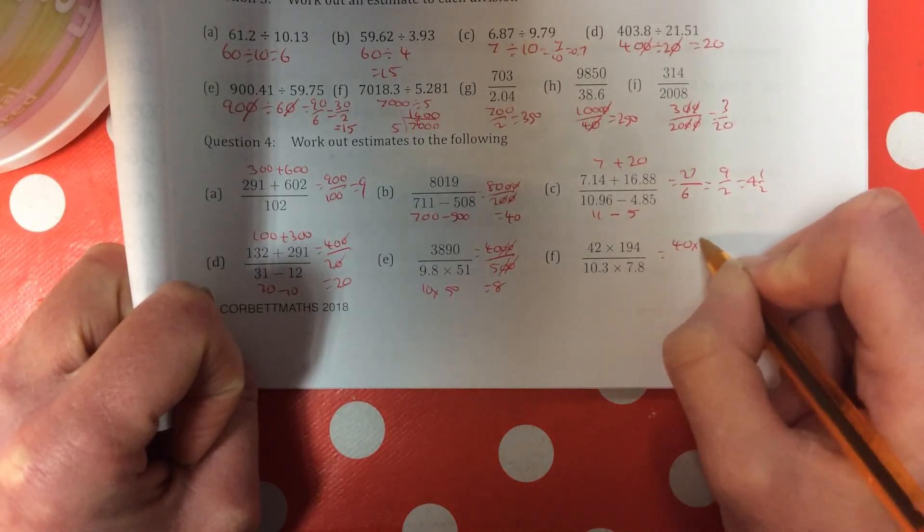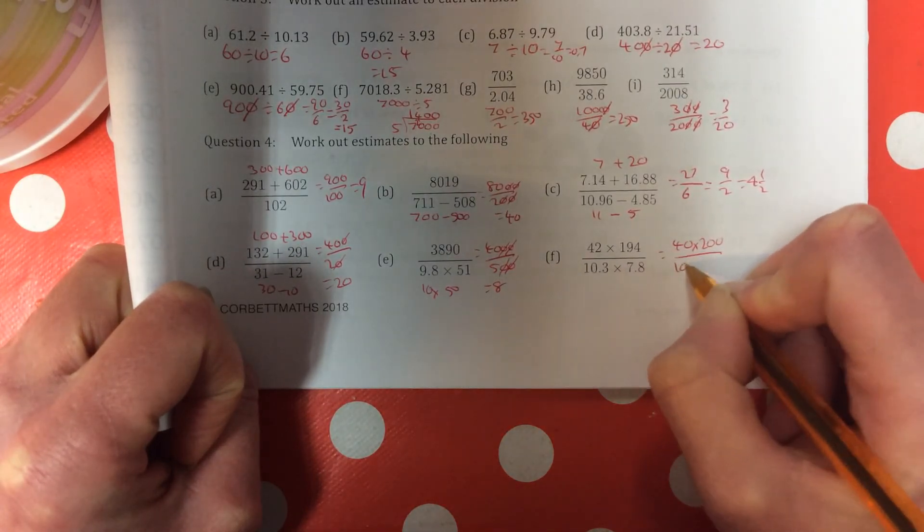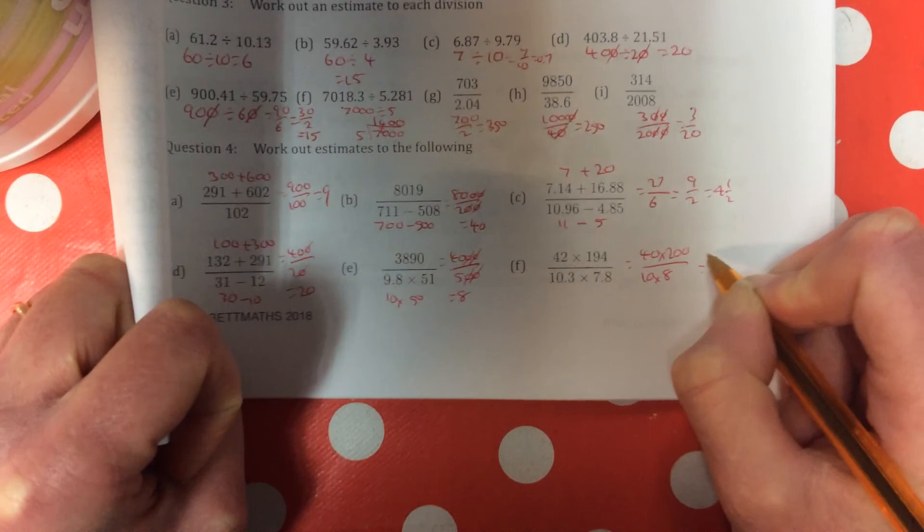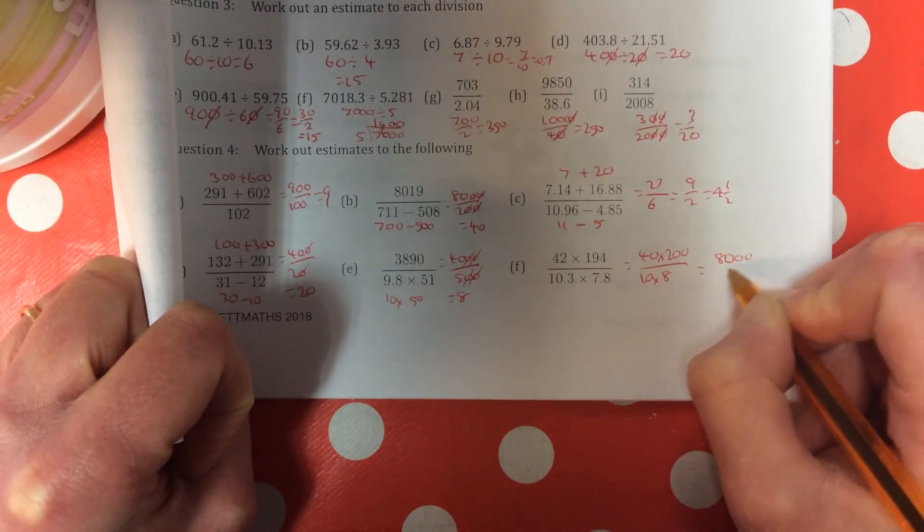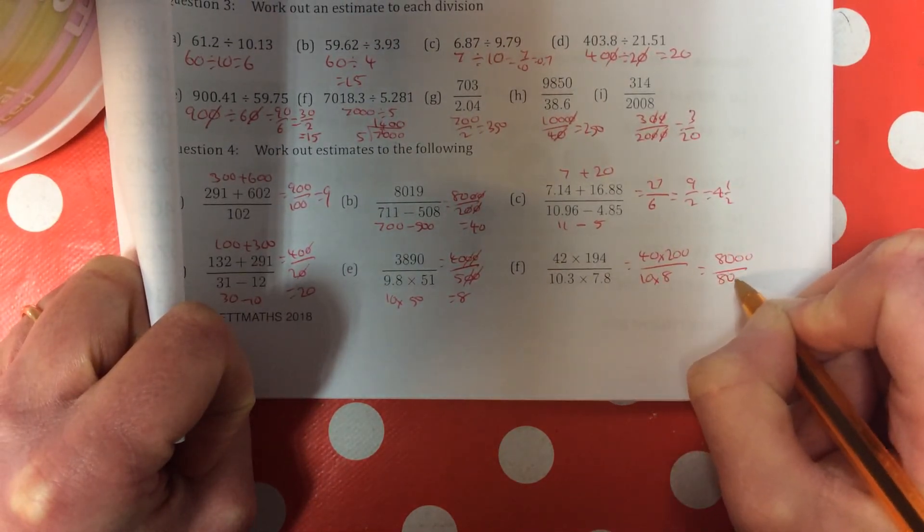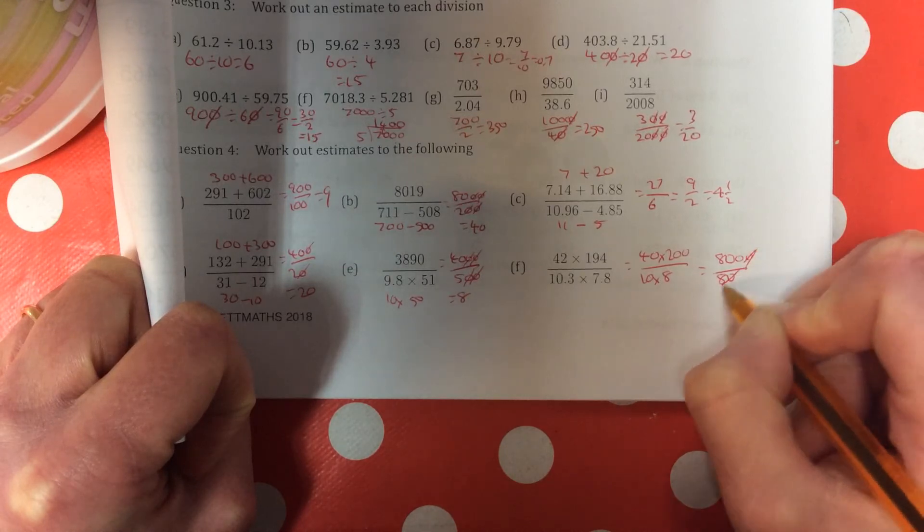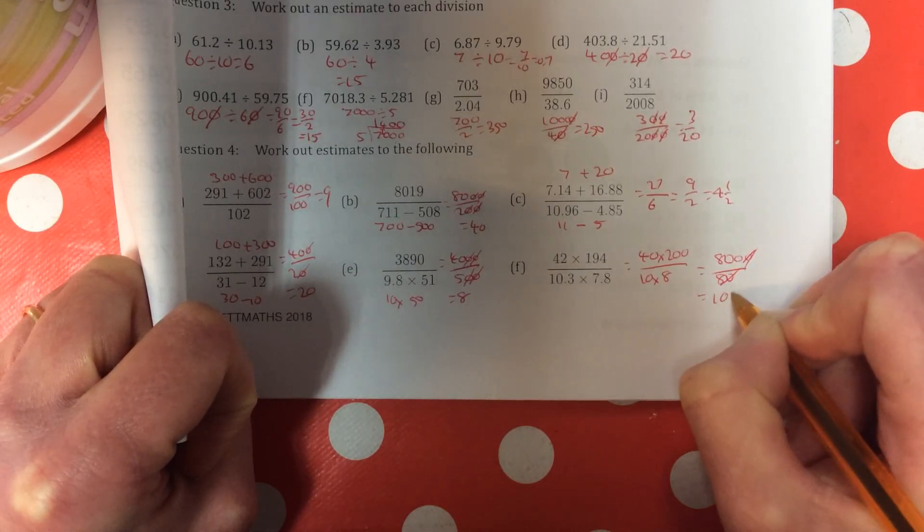And part F, it's 40 times 200 over 10 times 8. So, top line becomes 8,000. Bottom line becomes 80. Take a nought of top and bottom. Gives you 800 divided by 8, which is 100.